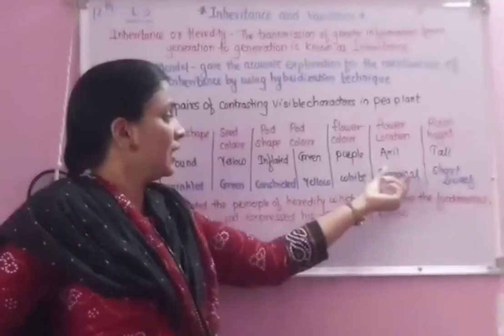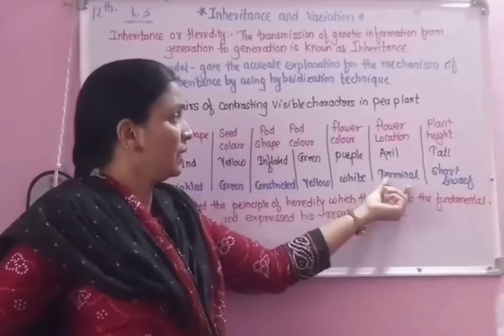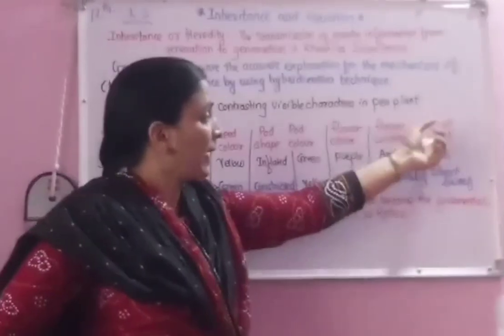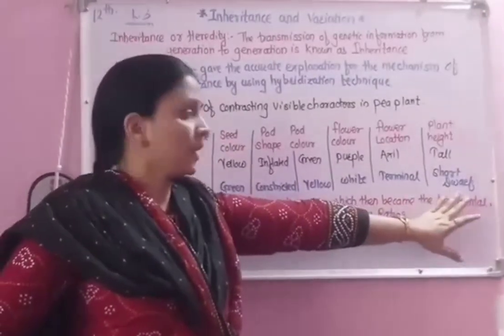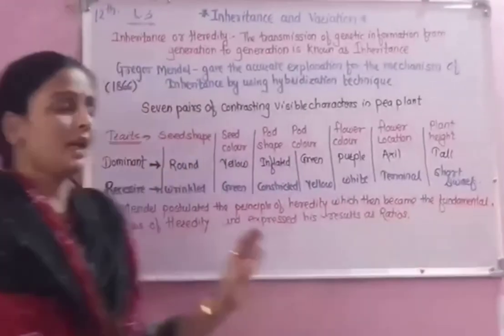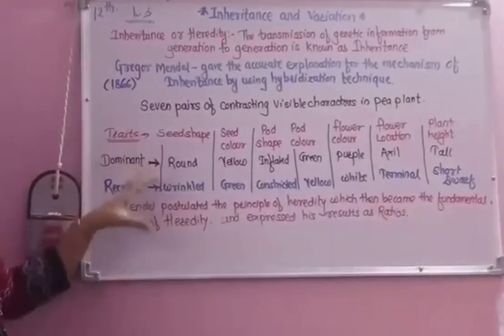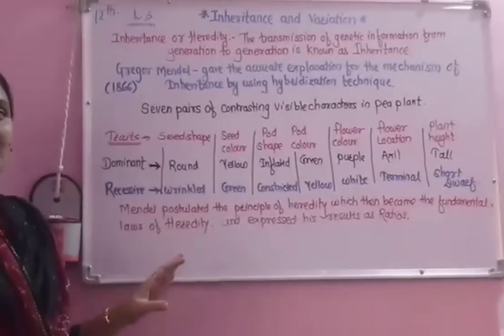For flower location: axial versus terminal. For plant height: tall versus short. Each of these represents a contrasting character pair used in Mendel's experiments.